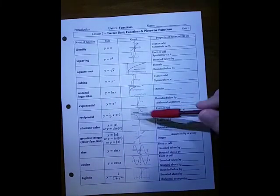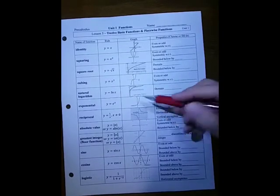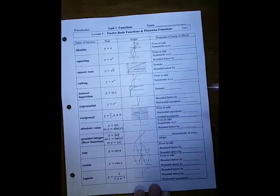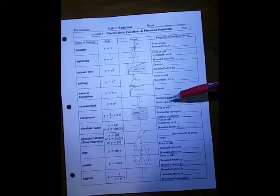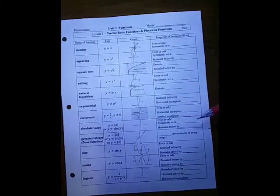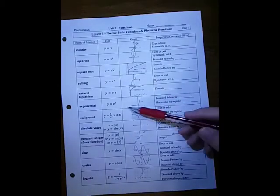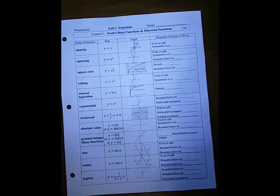The exponential function — again, the x-axis is an asymptote. When talking about bounded, we're talking about y-values. What's it bounded below by? And what's the equation of the horizontal asymptote? If it's the x-axis, what's that equation?